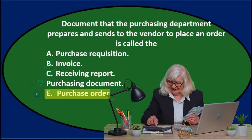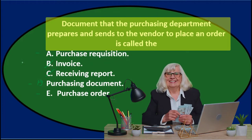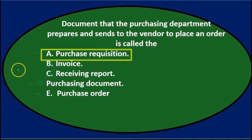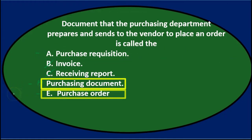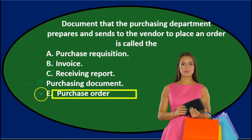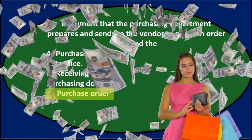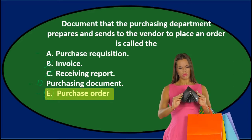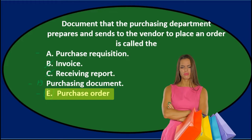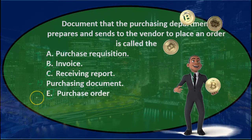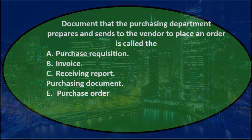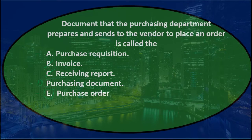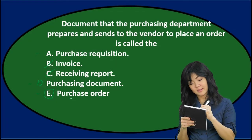And E says purchase order. Of those three remaining — purchase requisition, purchasing document, or purchase order — you just have to know the terminology, and the answer is going to be the purchase order. The purchase order is a bit different from what we might experience purchasing from Amazon. If we're a merchandising company, we can send a purchase order requesting that inventory be sent to us before we make the payment. So there's actually no transaction recorded related to the purchase order itself. It's typically issued by the purchasing department.